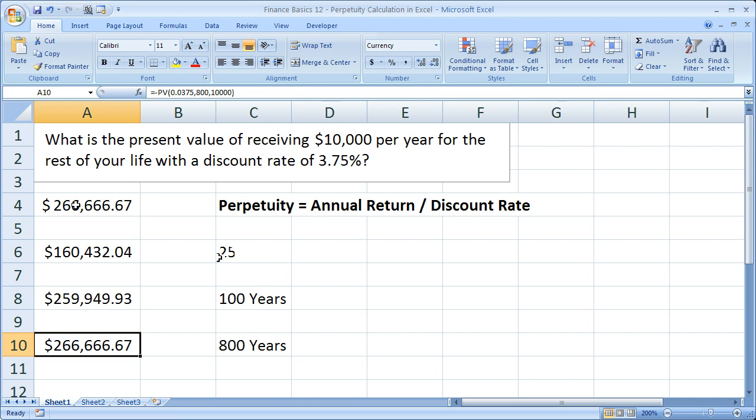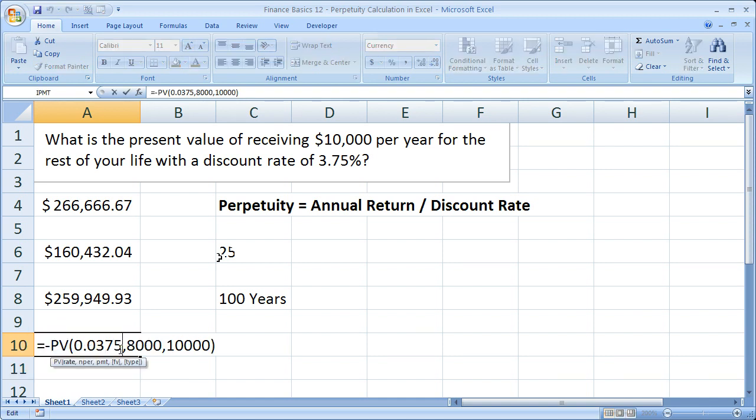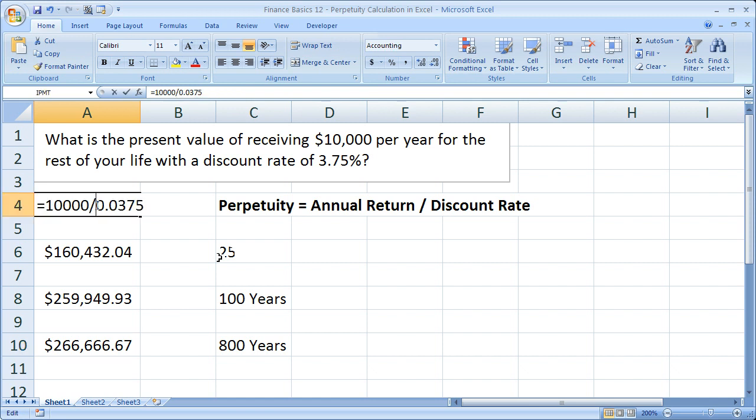Exactly the same as we would have with the perpetuity. And it doesn't matter what you change this to, really. It's going to be the same. So that's why you don't need to go through doing the whole present value function. Because this tiny little perpetuity formula is going to equal the same thing.